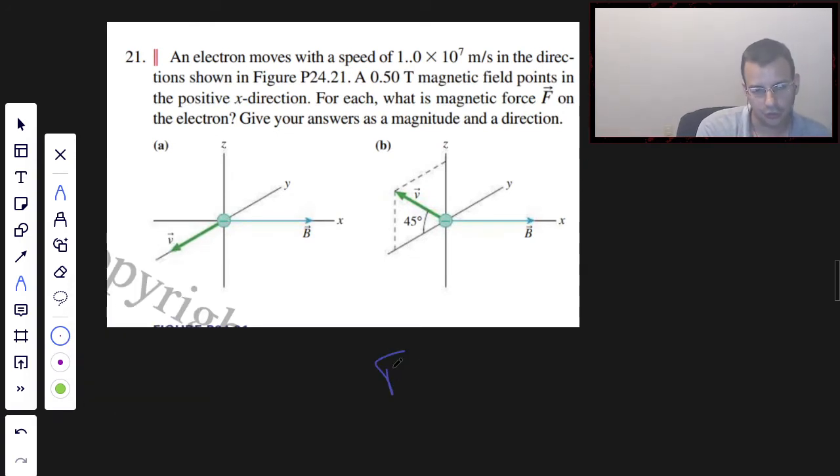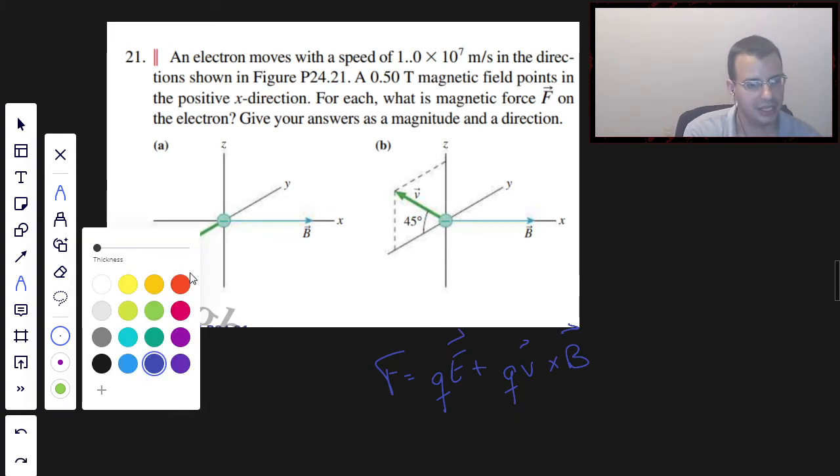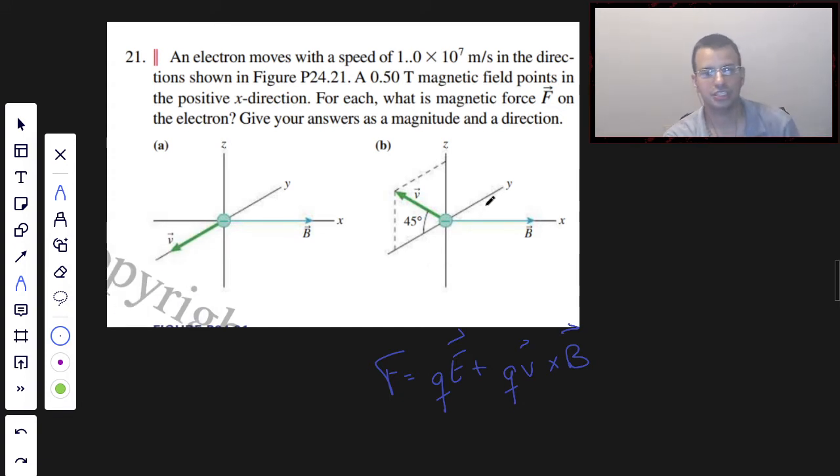So the formula we're going to use is the force on a charged particle. So this is the Coulomb force, the first part. This is the Lorentz force, the second part. But I usually just write it as one big formula like this. And then since they don't mention an electric field, we just assume that the electric field is zero, which is a fairly safe bet. And so what we're really doing here is charge q...